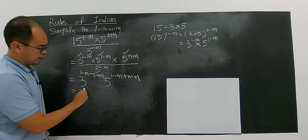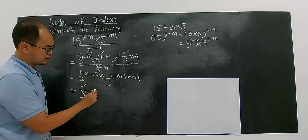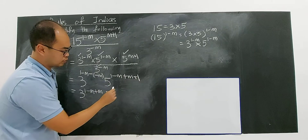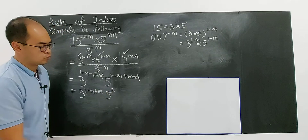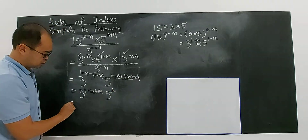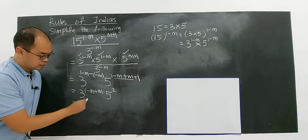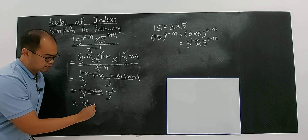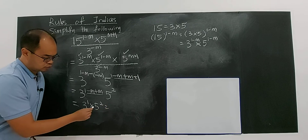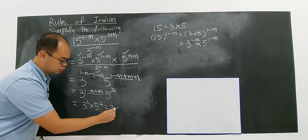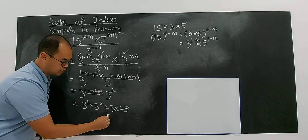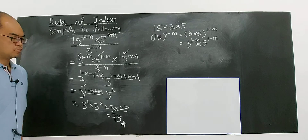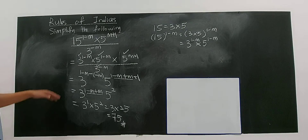So finally for the exponent of 3: 1 plus 1 gives 2, and negative m plus m gives 0 — so 3 to the power 1. For 5: the exponent is 2. So you get 3 times 5 squared, which is 3 times 25, giving you 75. The result is independent of m.